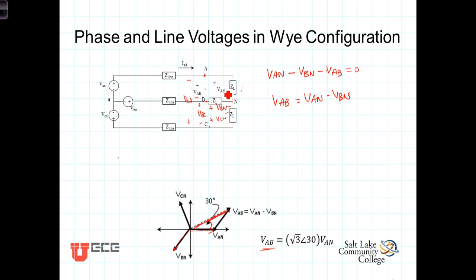Or, the phase voltage, the voltage across a single impedance, is less than the voltage from one line to the other, which goes across two impedances.